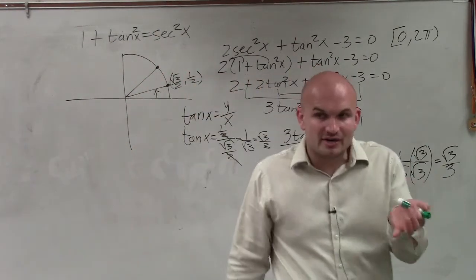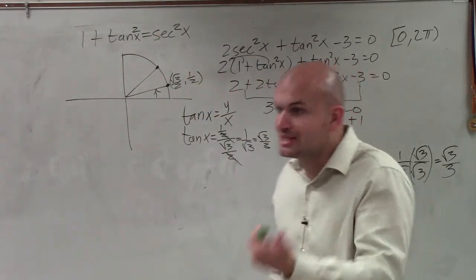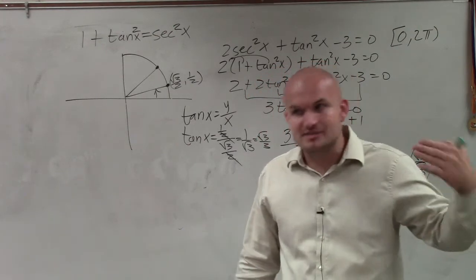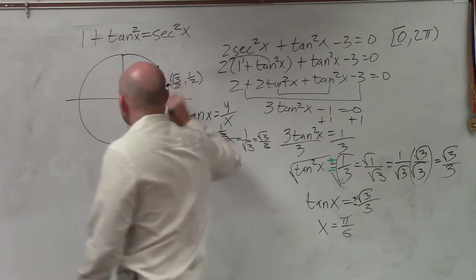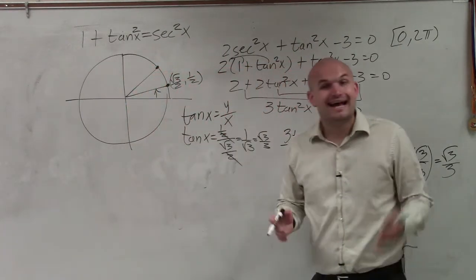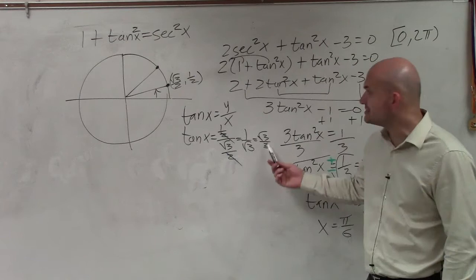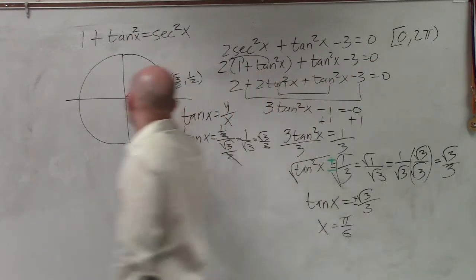But now what I need to make sure I'm very careful with is that the only solution between 0 and 2π, because we actually need to find all of these solutions. And they can be positive or they can be negative. This is an example of a positive one.